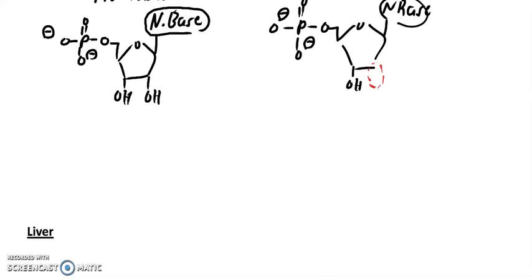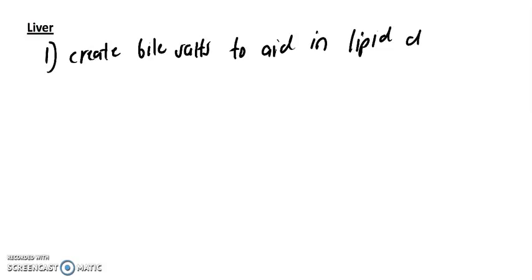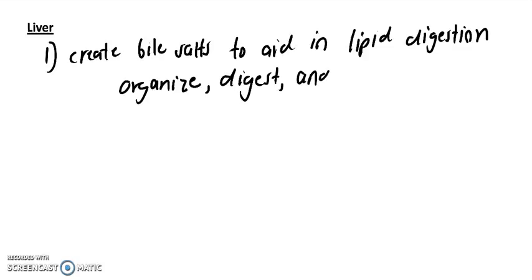Now on to the liver. The first function is to create bile salts, and this is to aid in lipid digestion. This helps organize the lipids, helps digest further, and helps in absorption.